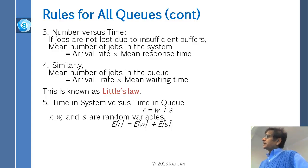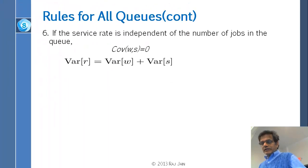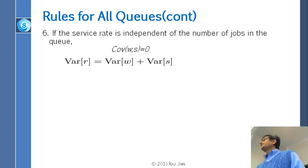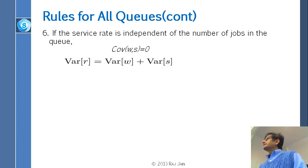Time in system versus time in queue: the waiting time plus service time equals response time. These are random numbers — they add up, so their means add up. Mean response time equals mean waiting time plus mean service time. Their variances add up only if they are independent, meaning the covariance of W and N is zero.